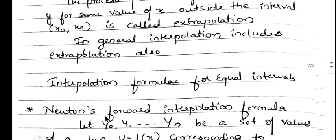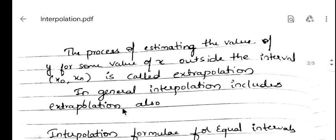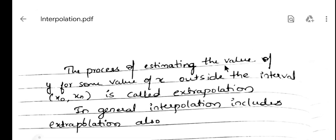We have two methods: Newton's forward interpolation formula and Newton's backward interpolation formula. In the forward interpolation formula we use the y₀ terms, and in the backward interpolation formula we use the yₙ, that is the last term.